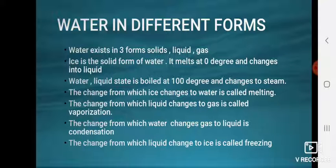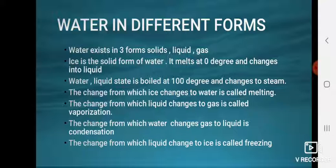Ice melts at zero degrees and changes into liquid water. Liquid water is boiled at 100 degrees and changes to steam. The change from ice to water is called melting. The change from liquid to gas is called vaporization.